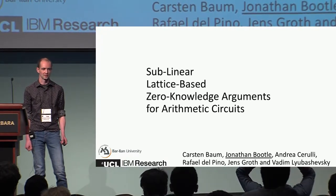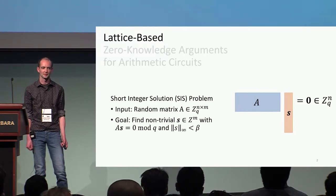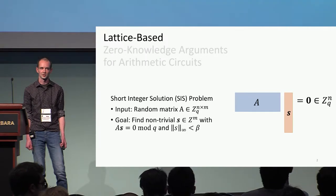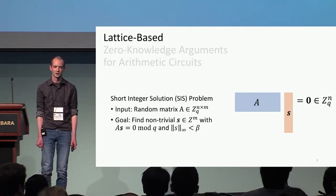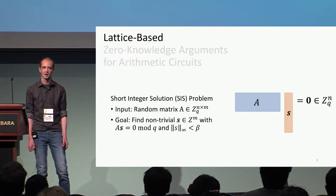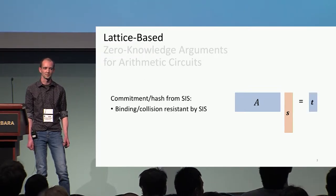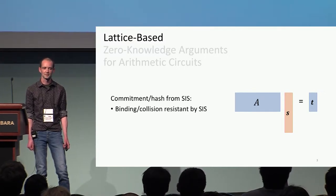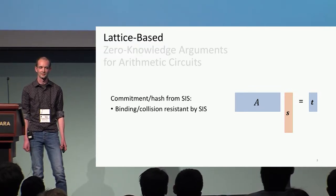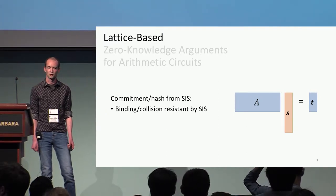I'll start quickly by talking about the lattice assumption that we base our protocol on. Our zero-knowledge argument is based on this problem: the short integer solution problem. In that problem, the input is a random matrix A over some finite field Z_Q. It's a wide matrix, and you can solve the SIS problem by finding some short vector S which is in the kernel of A.